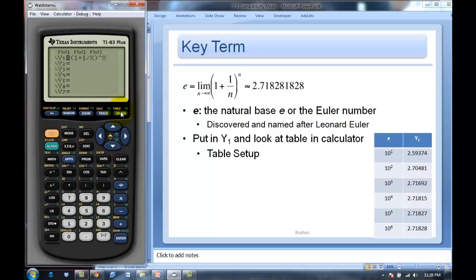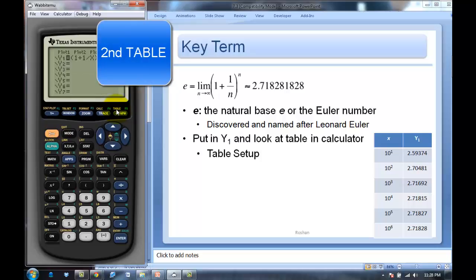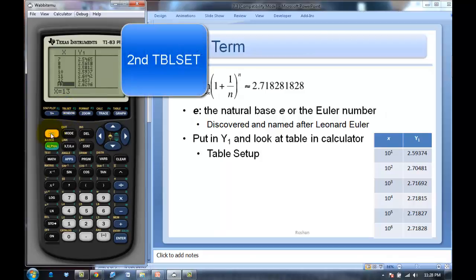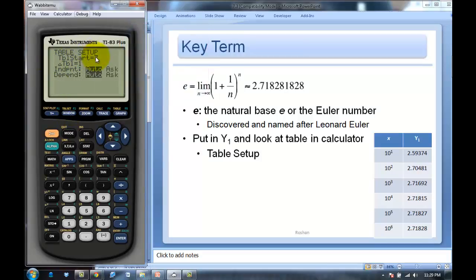We haven't done much with table of values in this class yet, but by pressing second table here, you can go to a table of values. When we do that, you'll see that I was talking about x getting huge. I'm going to have to press this arrow a whole lot of times and my hands are going to get really tired. So there's something really great here called the table set. That's a lot like the window when you're graphing. Go to second table set. Our table set right now is starting at 7. Let's start it at 10.